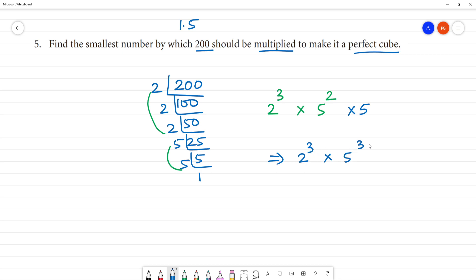2 cube multiplied by 5 cube is 2 multiplied by 5 the whole cube, that is equal to 10 cube, then 1000. So 1000 is a perfect cube.